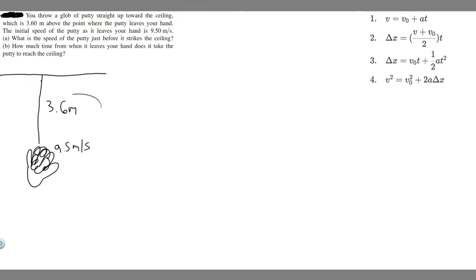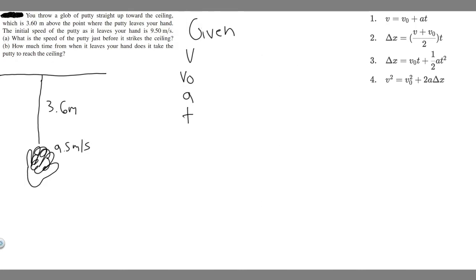So this is just a drawing of what's going on. Let's go ahead and write down what we're given. When we solve these problems, I always like to write down all the kinematic variables and then determine whether or not we're given them. So these are the kinematic equations — we write down every single variable: V, V sub 0, A, T, and in this case delta Y. In these equations they say delta X, but keep in mind we're moving in the vertical direction, so we write delta Y.